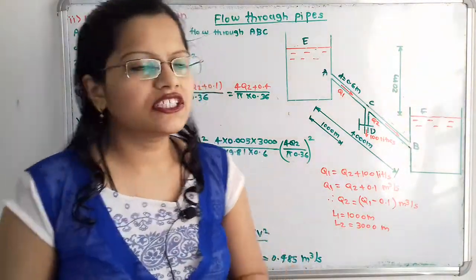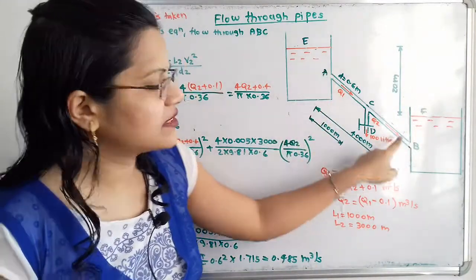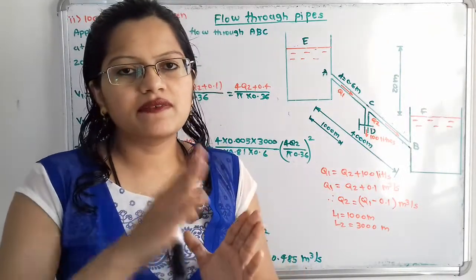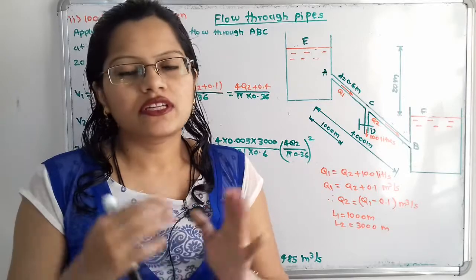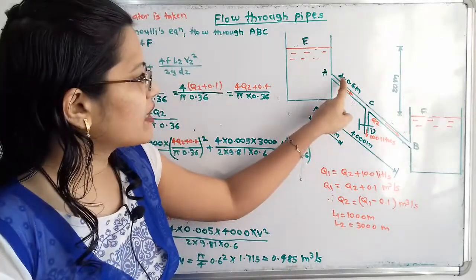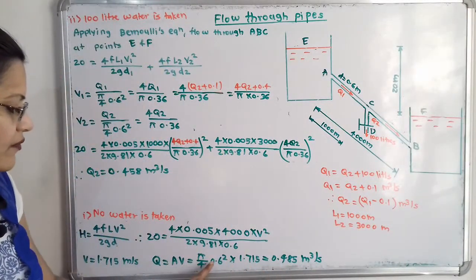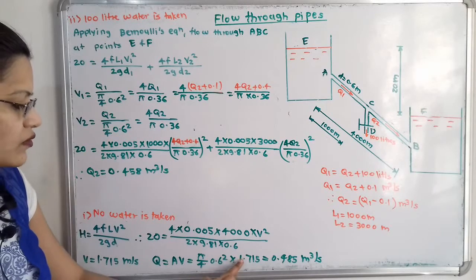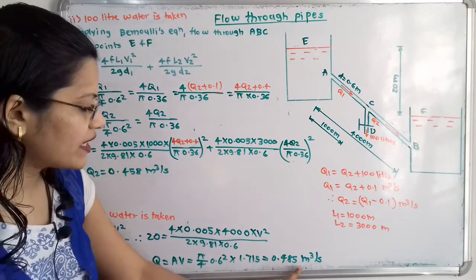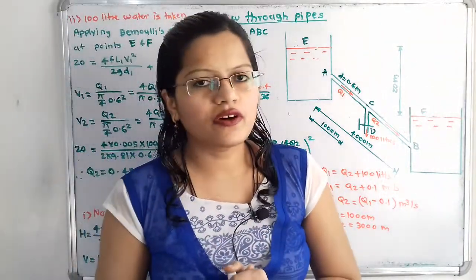Now we calculate the discharge Q to the lower reservoir. Discharge Q = Area × Velocity = (π/4) × (0.6)² × 1.715 = 0.485 m³/s. This is the answer for the first case.